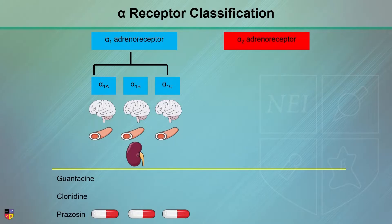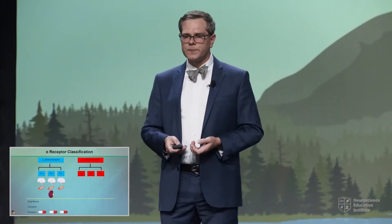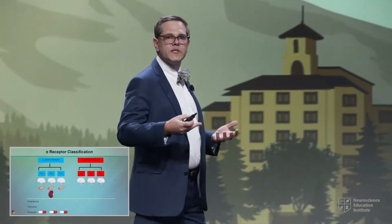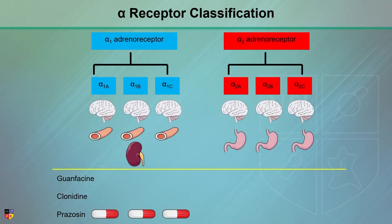Shifting to the other adrenoreceptor, we have the alpha-2 adrenoreceptor, which is essentially a system comprised of alpha-2a, alpha-2b, and alpha-2c receptors. The alpha-2a, b, and c receptors are located throughout the brain, primarily in cortical areas, although they're also located in some subcortical areas as well. They're also located throughout the GI system, where they have some effects in terms of motility.